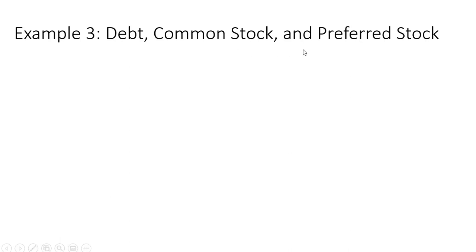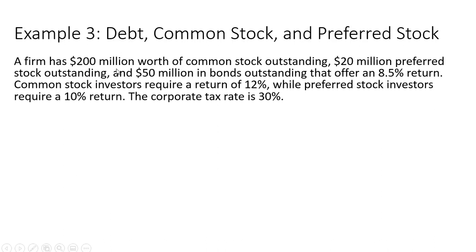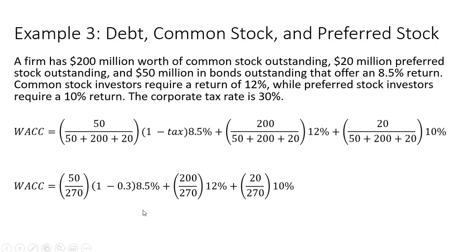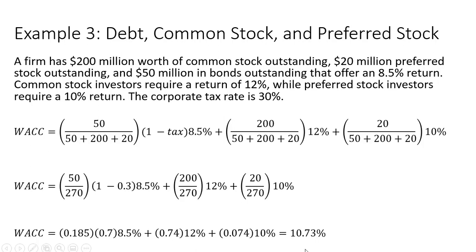Example 3: here we have debt, common stock, and preferred stock. The firm has $200 million worth of common stock outstanding, $20 million of preferred stock outstanding, and $50 million in bonds outstanding. Common stock investors require a 12% return, preferred stock investors require a 10% return, and we again apply the tax deduction for interest payments on debt. The total value of debt, equity, and preferred stock outstanding is $270 million. Preferred stock is included as $20 million divided by $270 million. Plugging in the corporate tax rate and simplifying, we get a weighted average cost of capital of 10.73%.